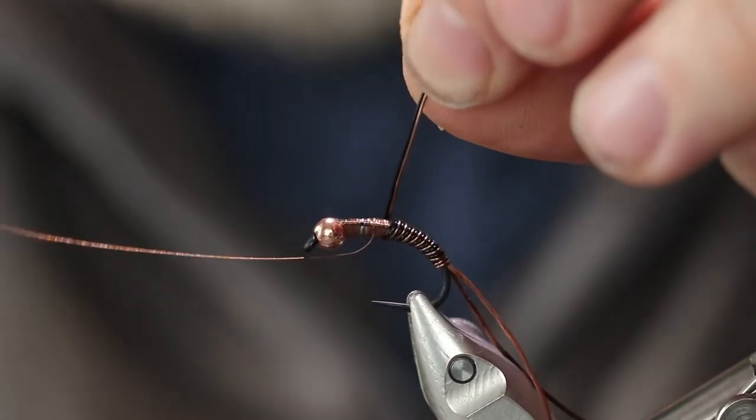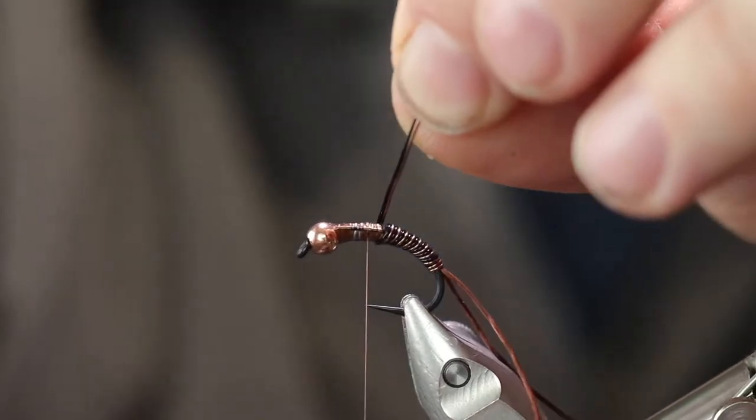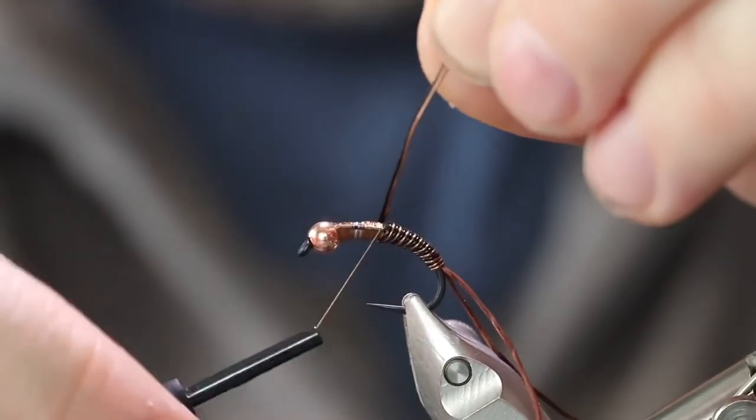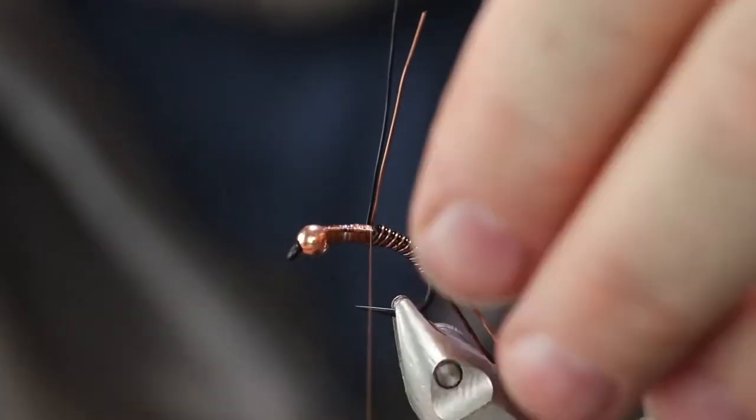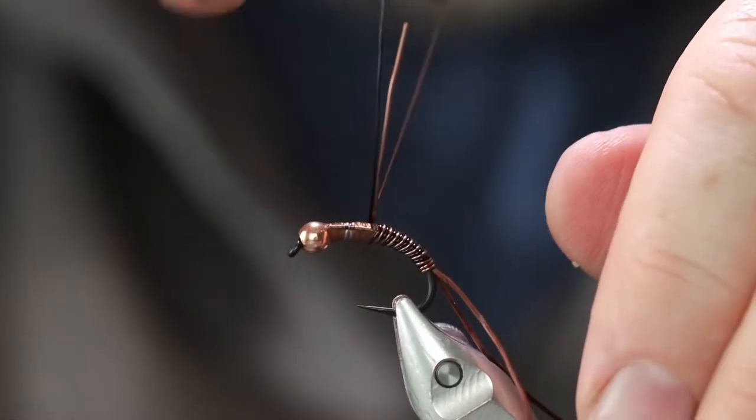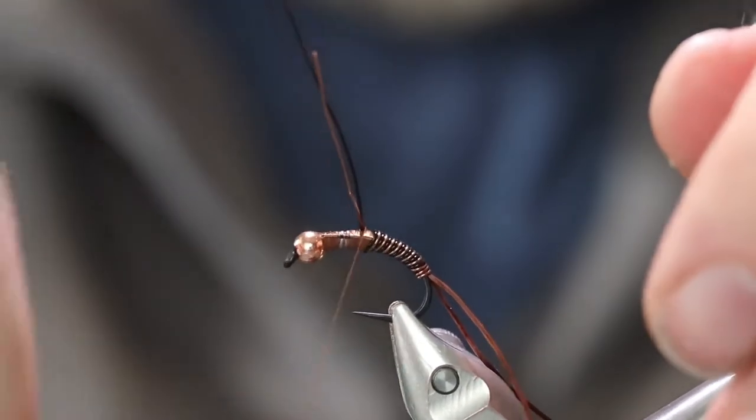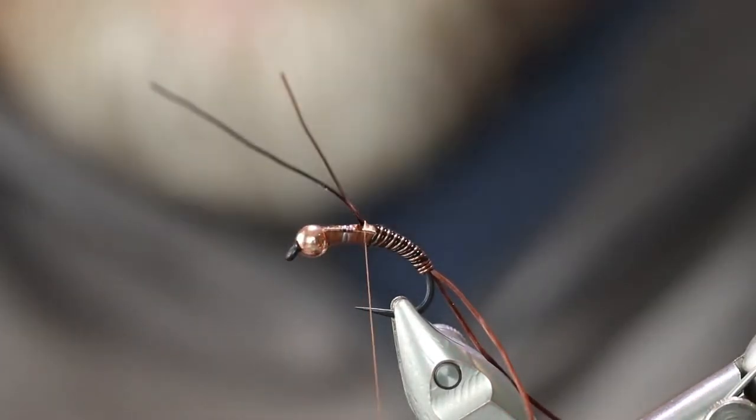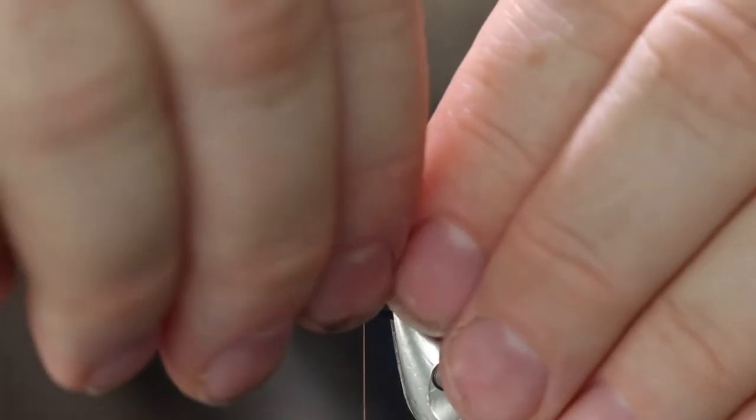Now that we got that, let's fasten the thread down or the wire down with the thread. Normally I helicopter the wire off. This stuff's pretty big and you're trying to helicopter them both off at the same time. It's a pain in the butt. We're going to be tying a shell back over this anyway so those sharp pieces of wire aren't really going to hurt anything.